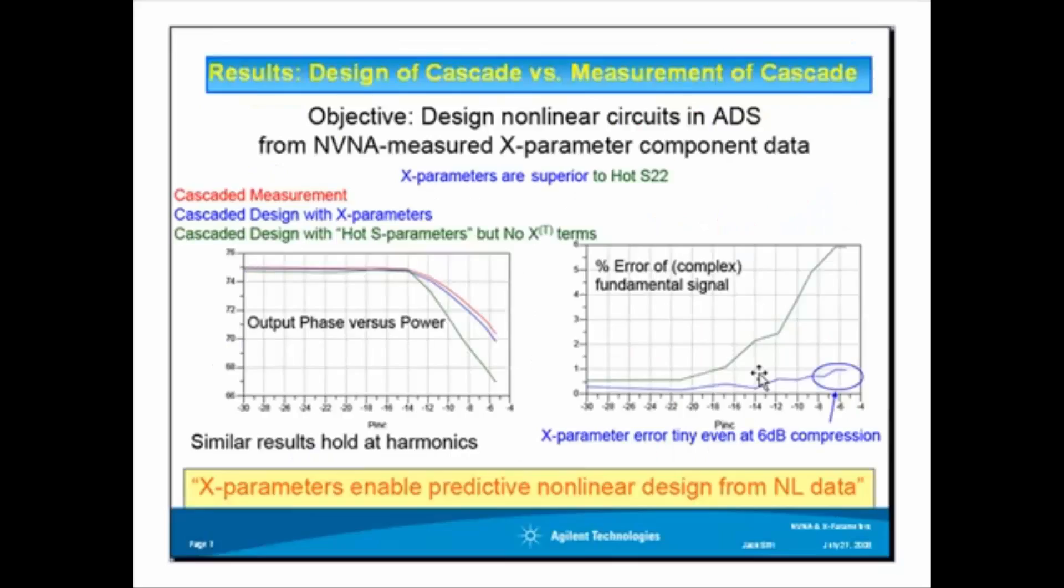This slide illustrates how the X parameters with the T term, that conjugate term, are superior to the hot S parameters. The red trace represents the measured output phase versus power of a cascaded nonlinear component. The blue trace is the ADS simulation results using the X parameters,